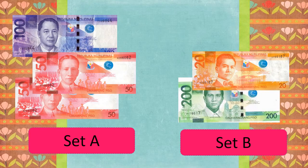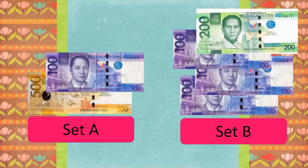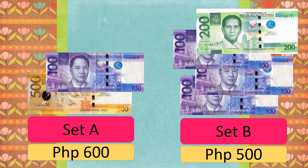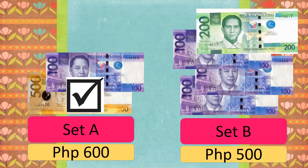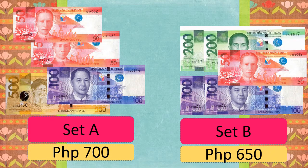How about on these sets? On Set A, we have 200 pesos. On Set B, we have 220 pesos. Which set is greater? It's Set B. How about on these sets? On Set A, we have 600 pesos. On Set B, we have 500 pesos. Which set is greater? It's Set A.